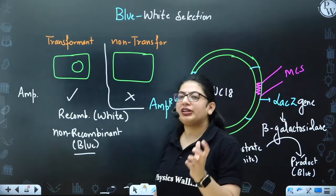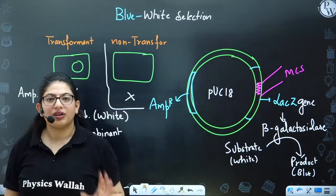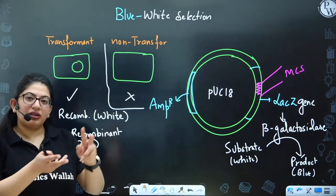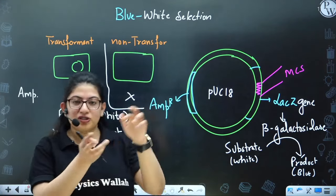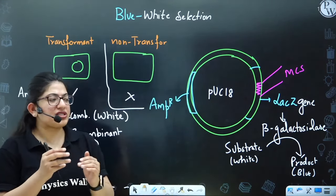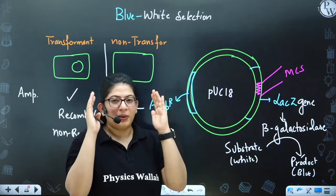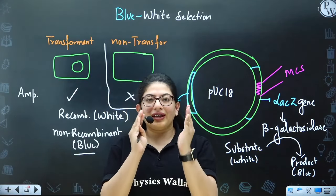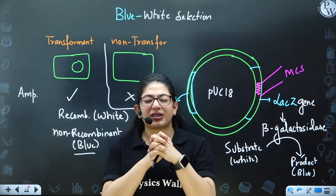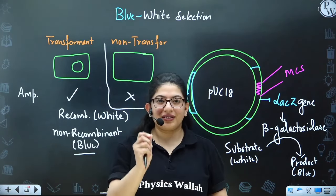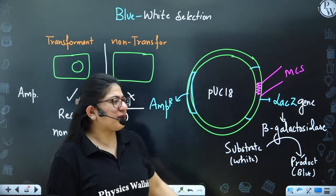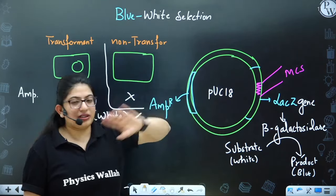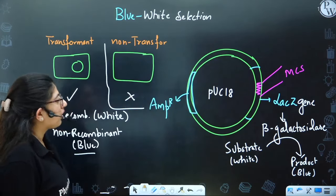You can use any vector and any technique to find out which is recombinant and which is non-recombinant. It all depends on whether the gene is present — if it has the gene, that selectable marker gene will be lost. Once you understand that, everything becomes simple.